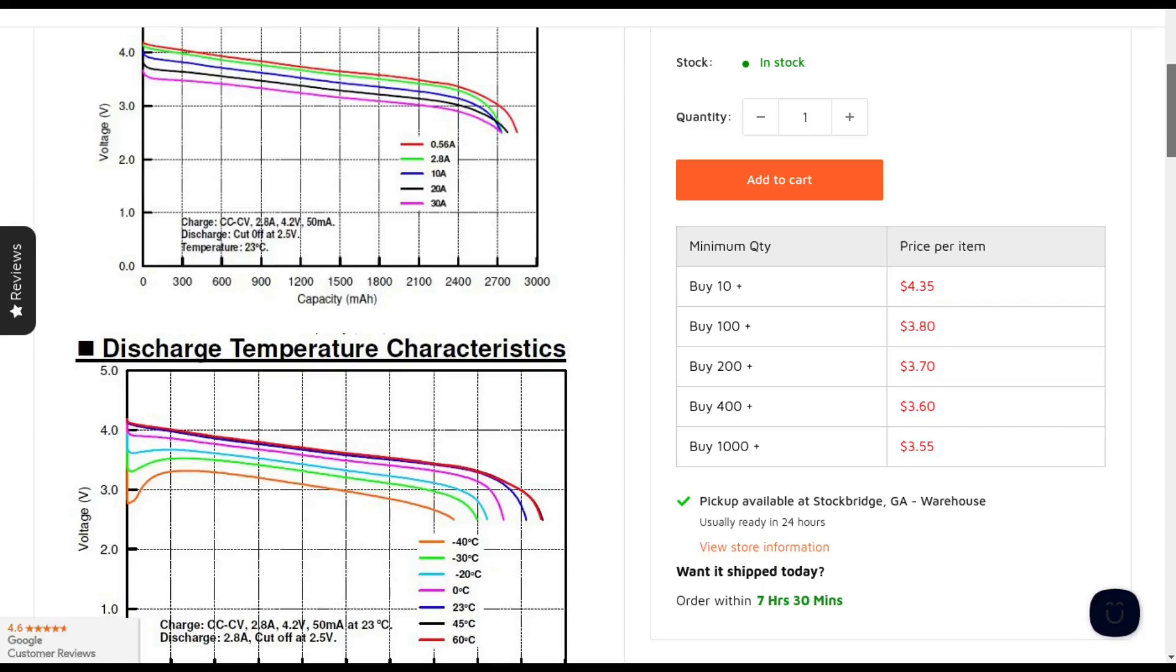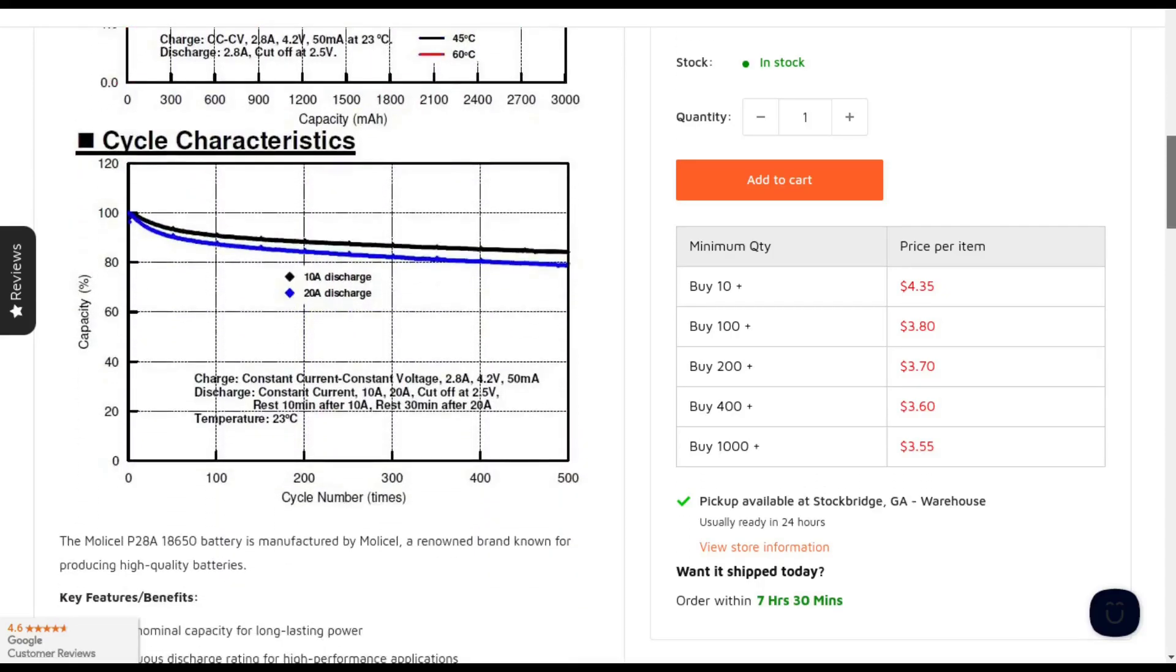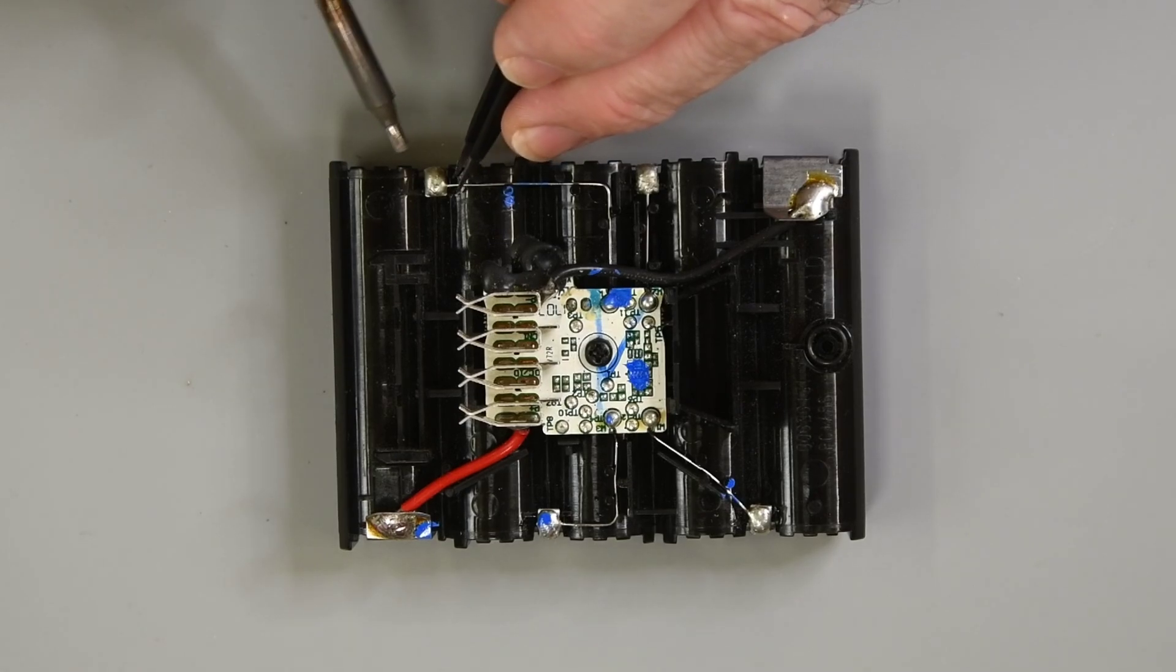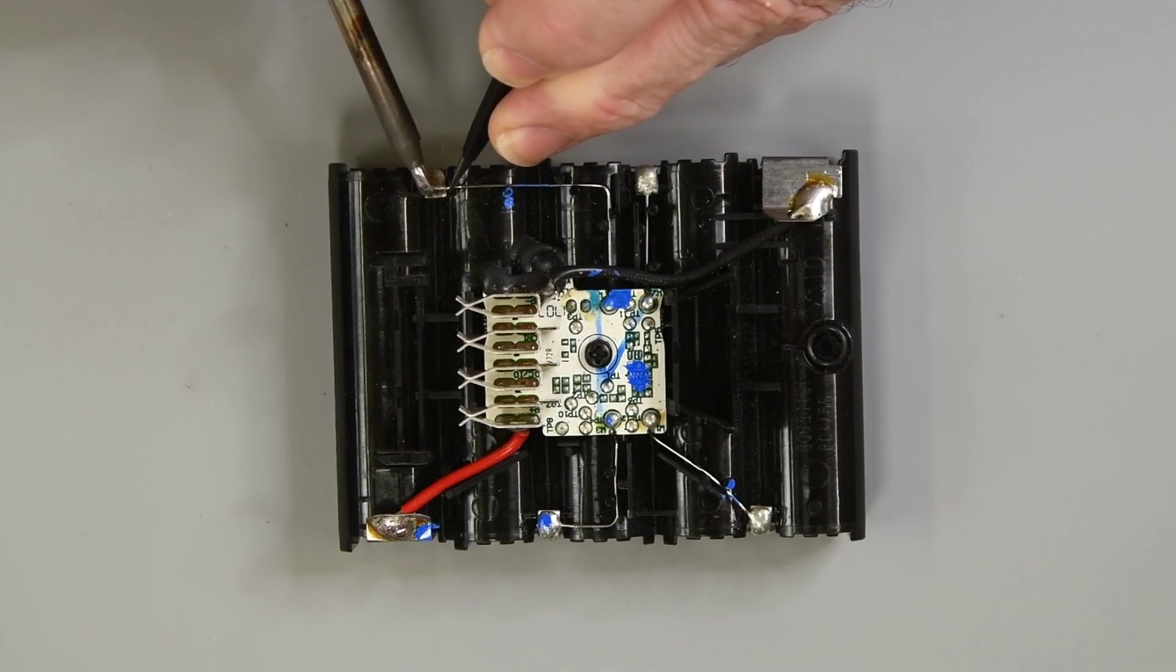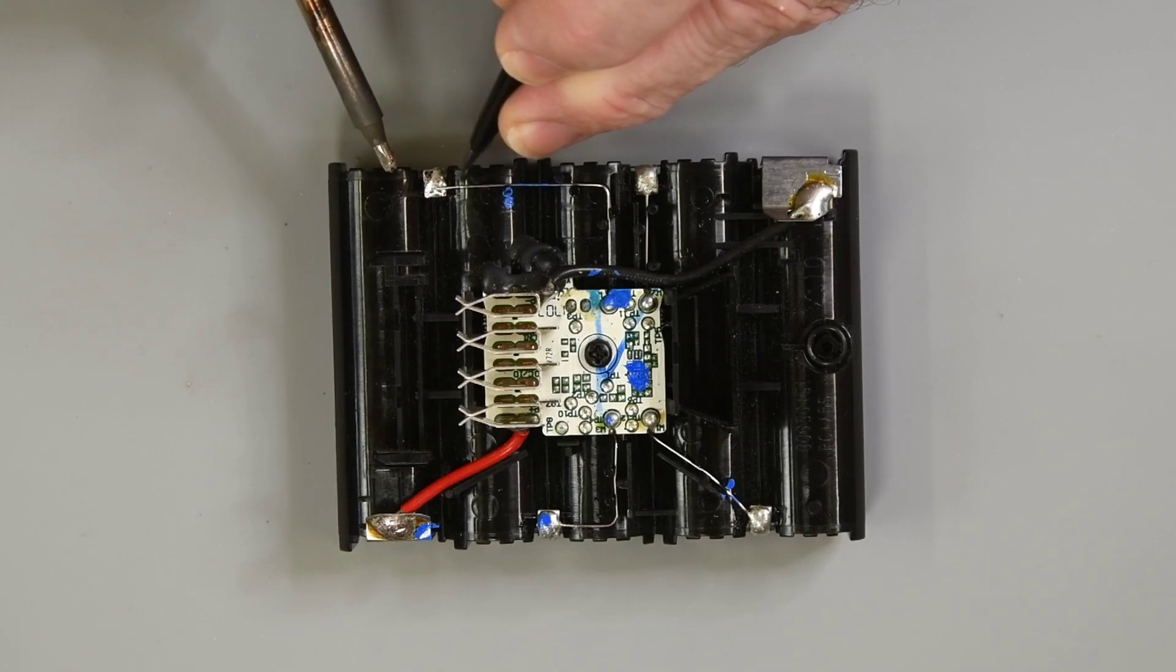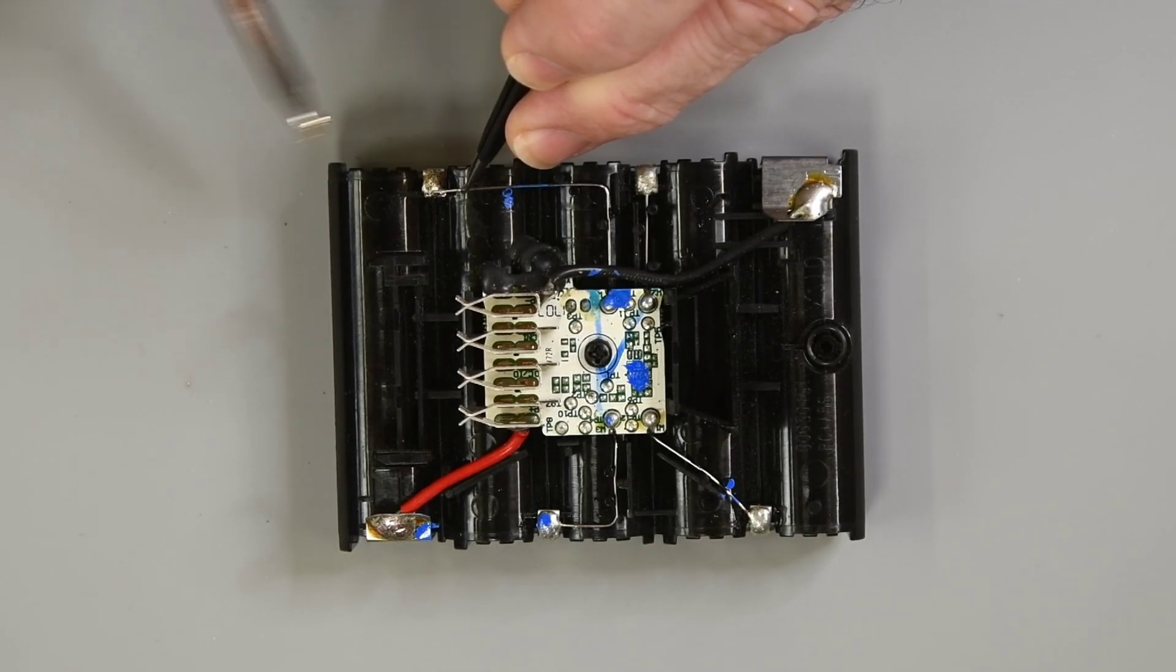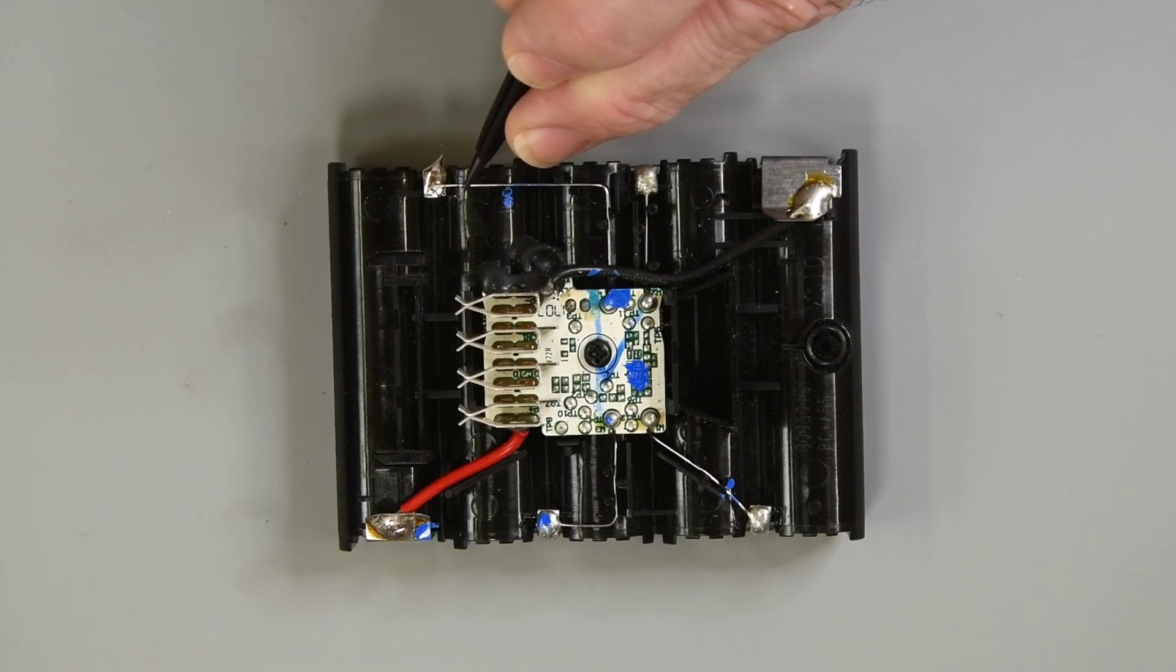If anyone watching has used Molicel batteries, please leave a comment on what you think of them. There is a soldered connection at each cell junction. I will unsolder these first. They are bare solid wire held in place by small plastic posts, and they didn't skimp on the solder. So I'll have to make some extensions for these.